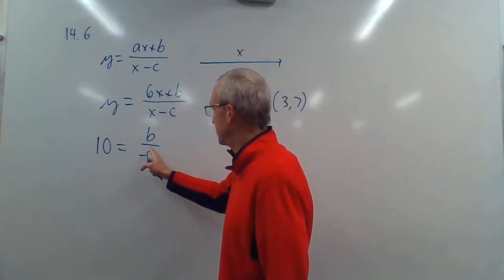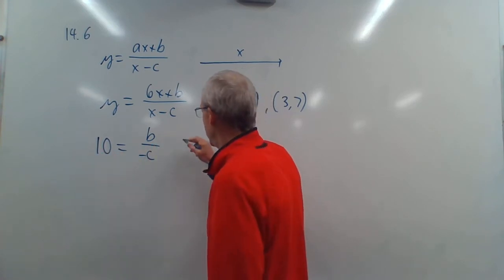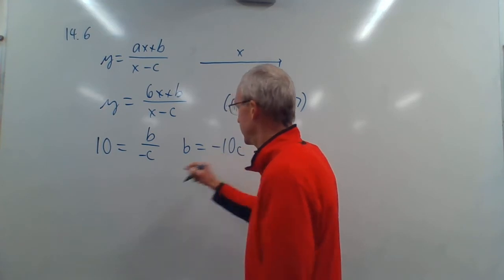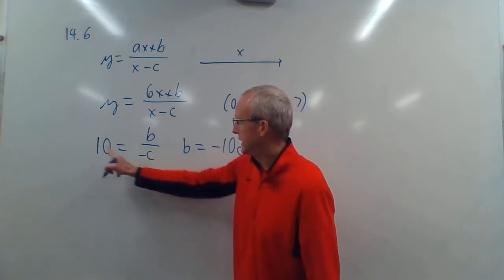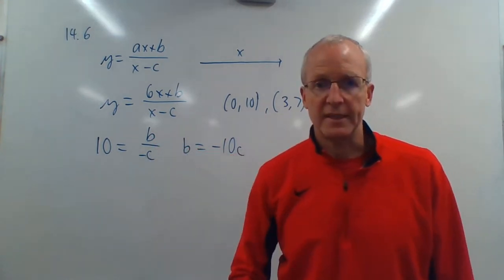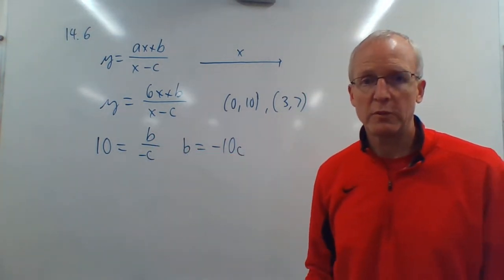Let's rewrite that as B. Put the negative C over here. So B is equal to negative 10C. We multiply negative C times 10, which makes negative 10C. It's nice to put the B first. That's one equation.